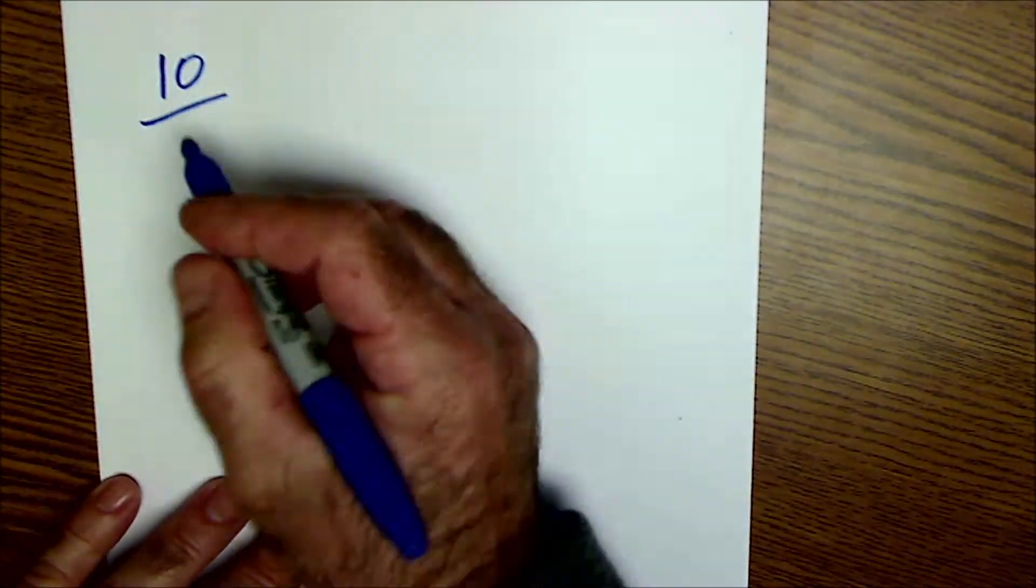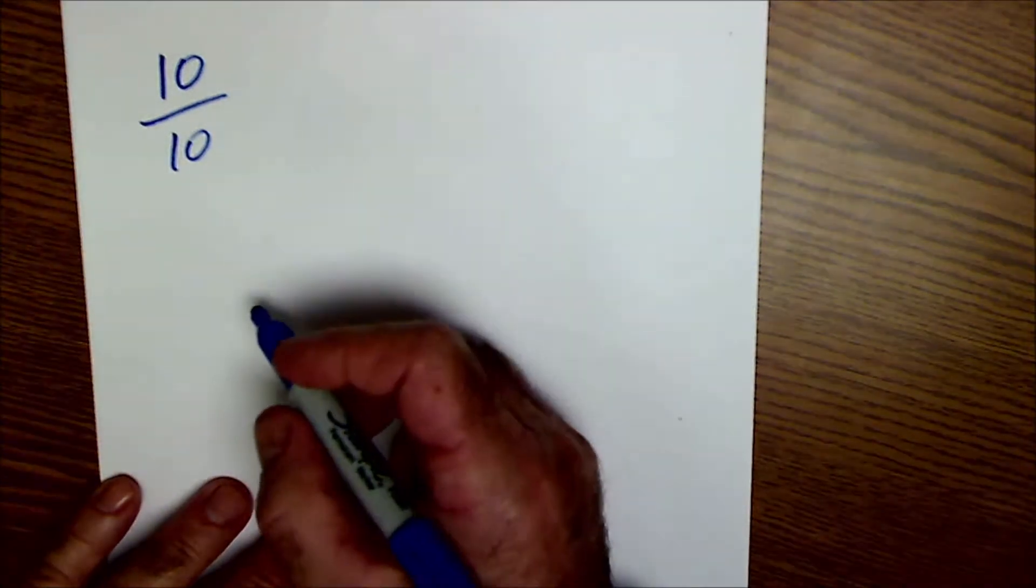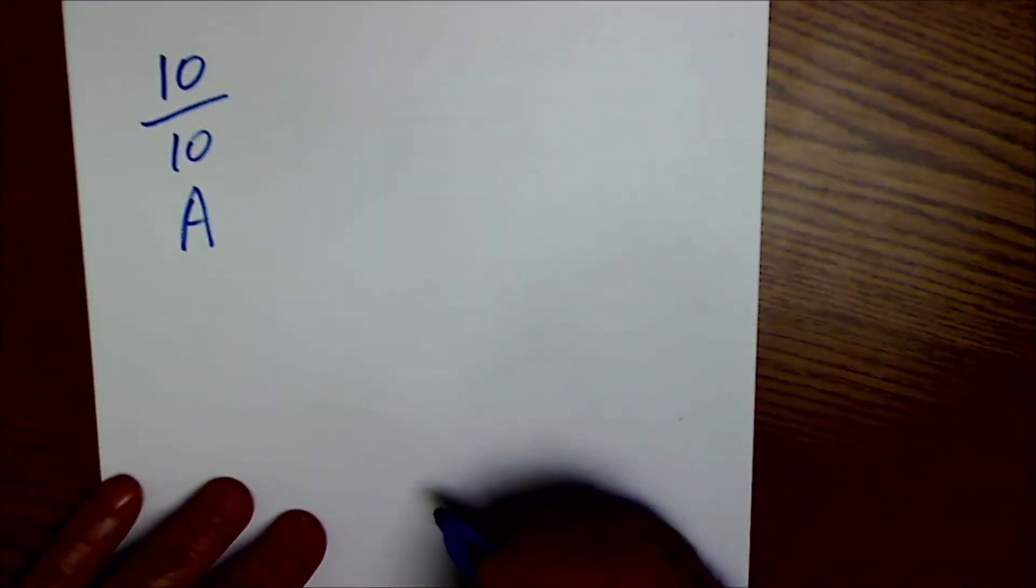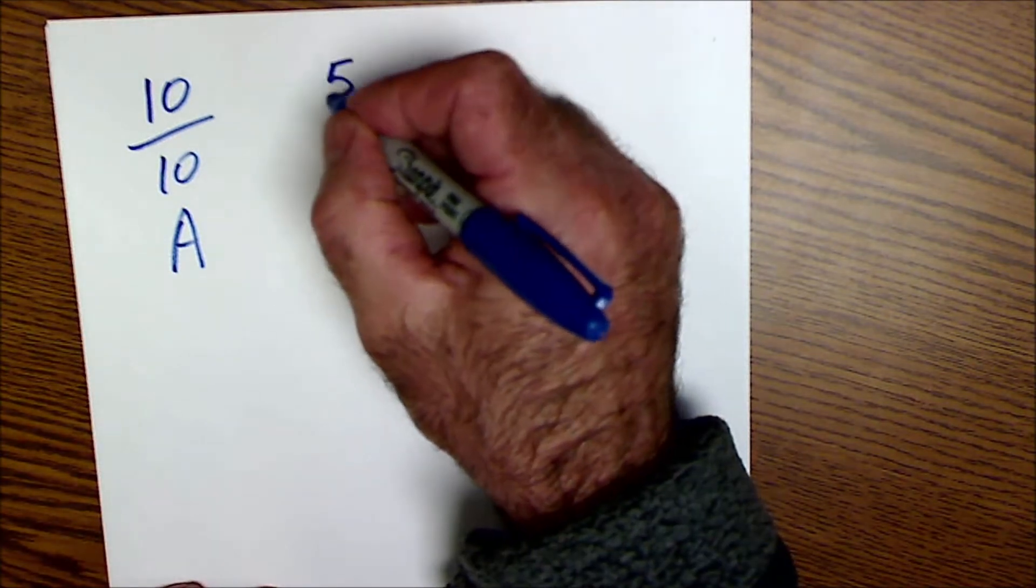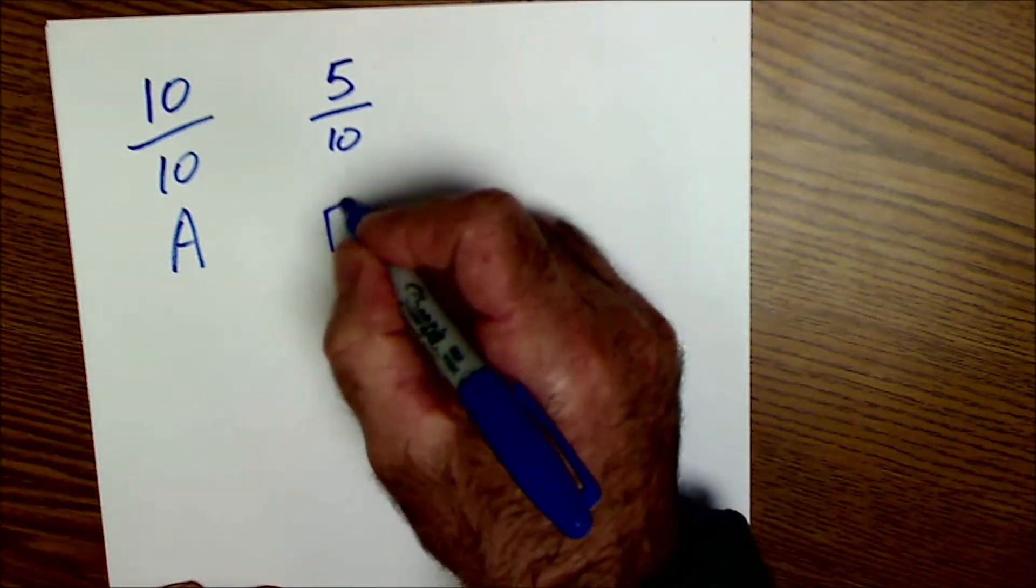So let's take a look at two different scenarios. First scenario: I'm well prepared, I get 10 out of 10 on the first quiz, I get an A. Second scenario: I don't study, I don't know what's going on, I get 5 out of 10, I get an F.